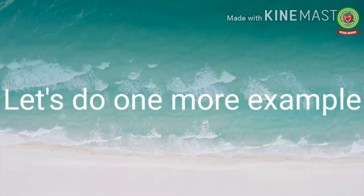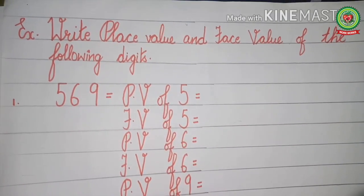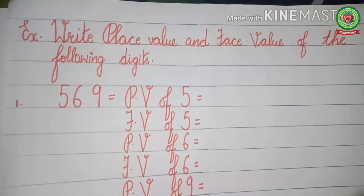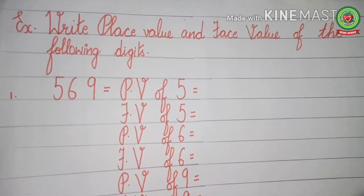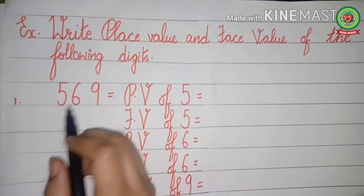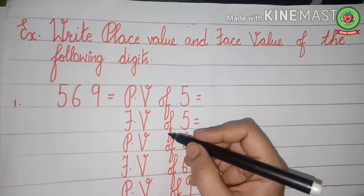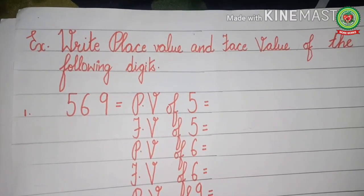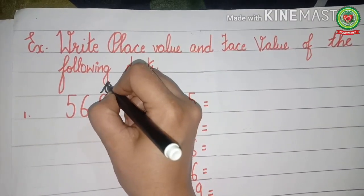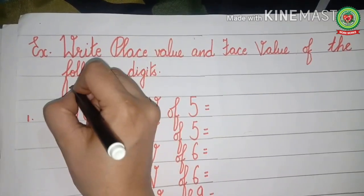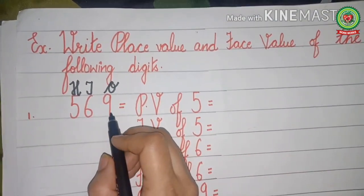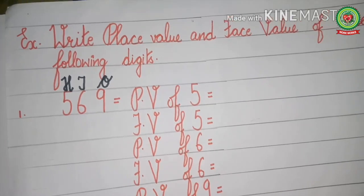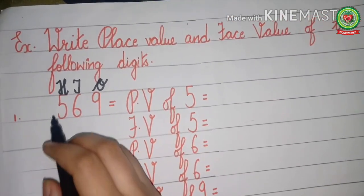Let's do one more example. Write the place value and face value of all the digits in number 569. Before writing the place value and face value, our first step is to write down the place value chart, starting from the right side — ones, tens, and hundreds. We always start the place value chart from the right side, but when writing the place value and face value, we start from the left side.